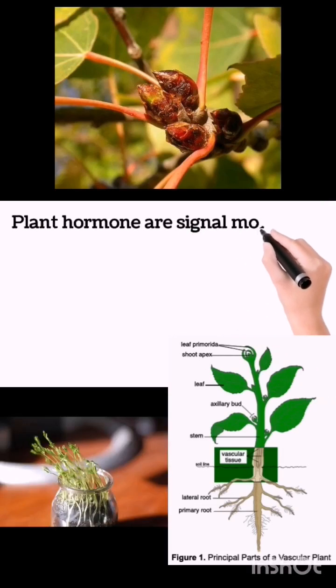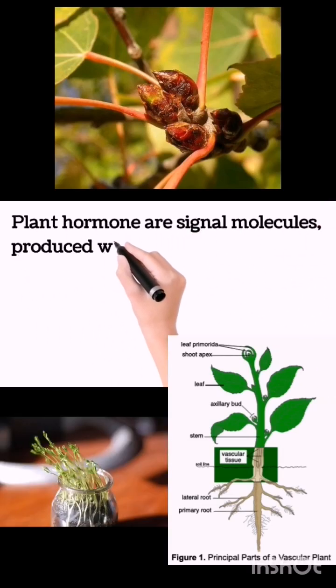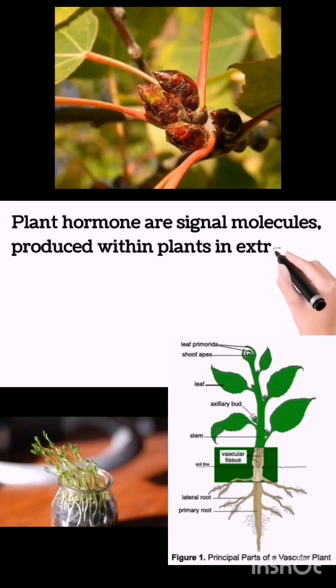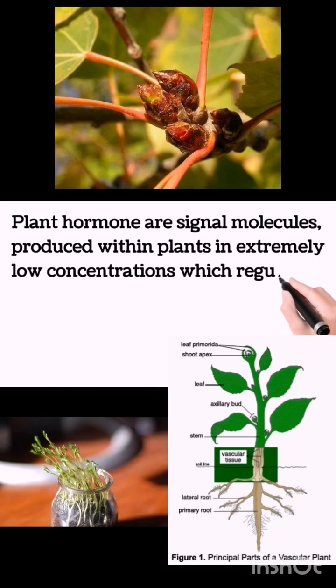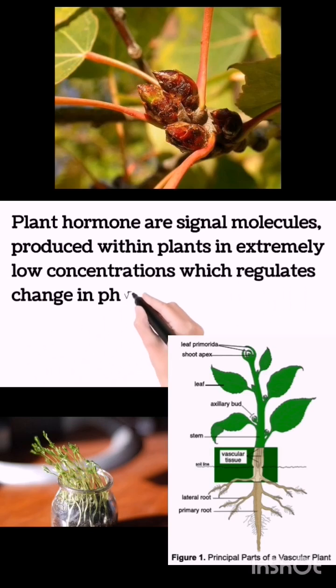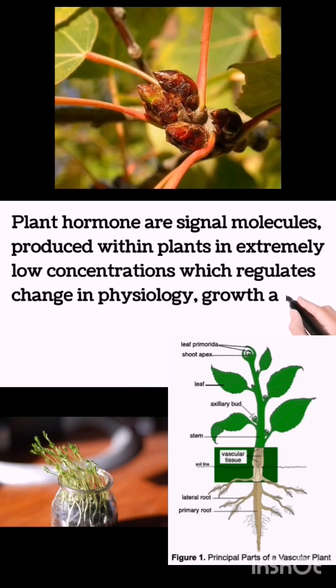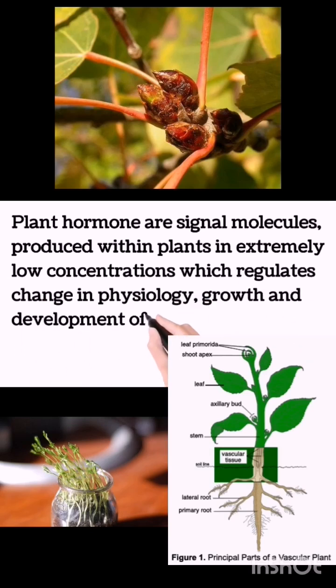Plant hormones are signal molecules produced within plants in extremely low concentrations, which regulate changes in physiology, growth and development of the plant.